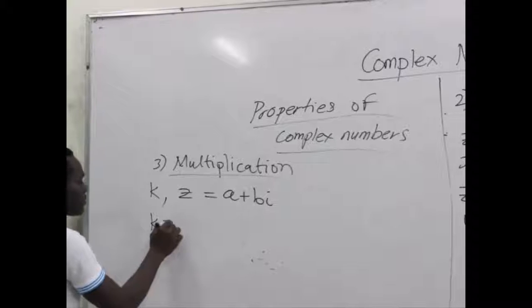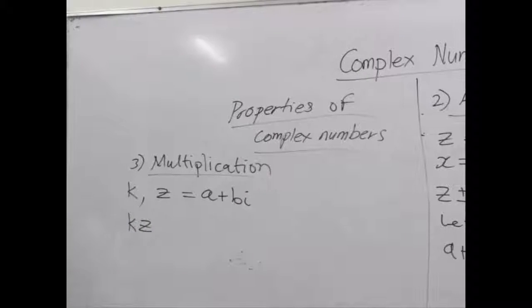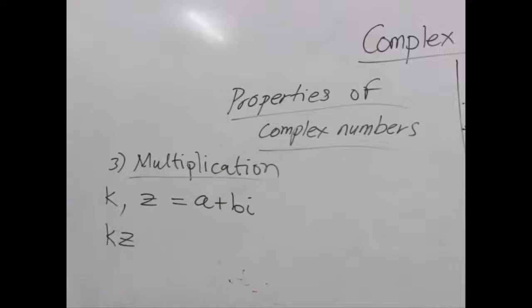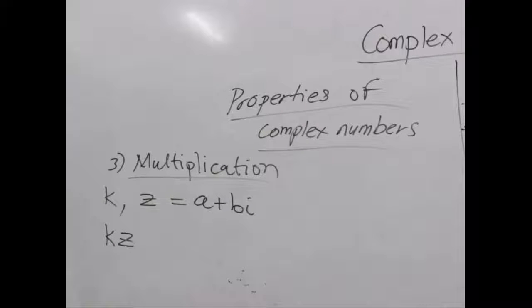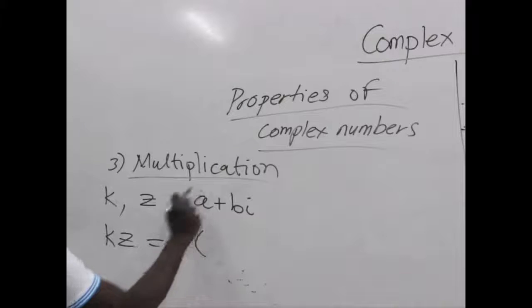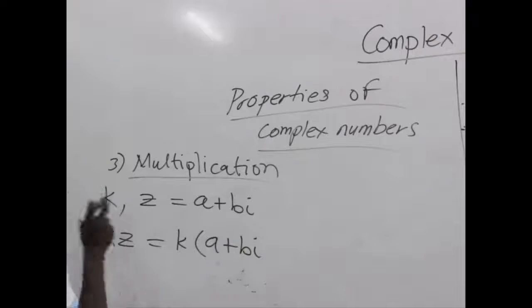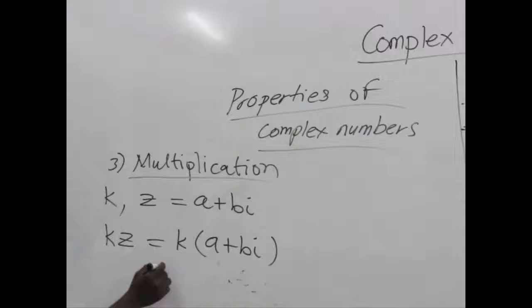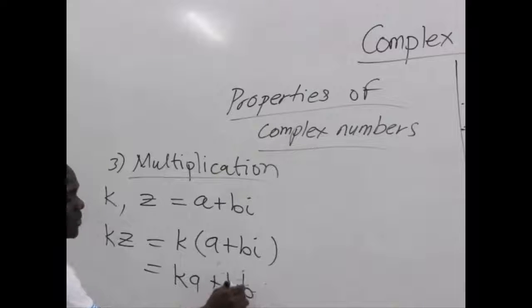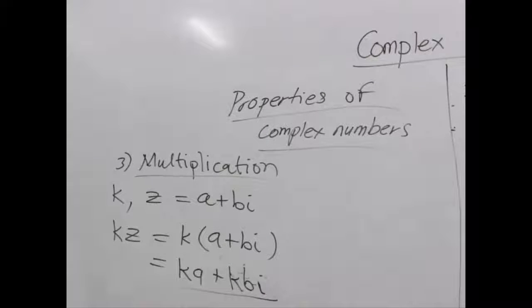Now we have to compute kz, which is the scalar times the complex number z. We simply have to multiply the constant by the entire component of the complex number z. This gives us, as we expand the brackets, ka plus kbi. So this is how we do the multiplication. Let's expand the brackets and we are good to go.